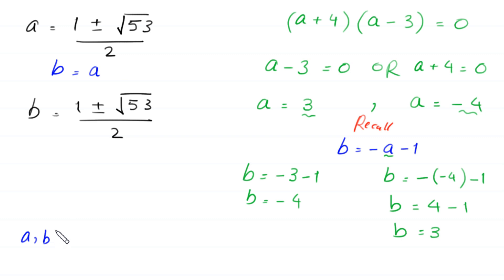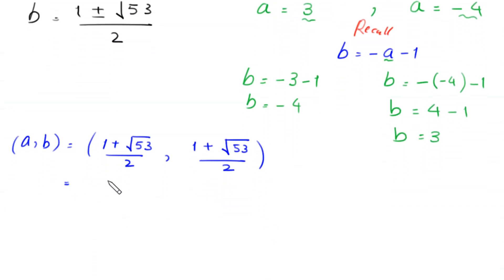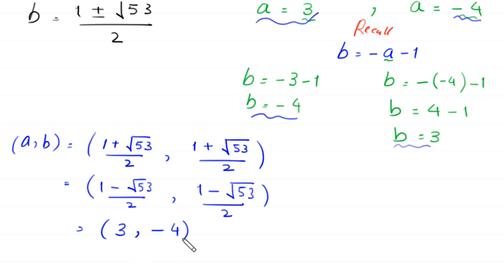So we get four pairs of solutions. The first pair: (a, b) equals ((1 plus root 53)/2, (1 plus root 53)/2). The second pair: ((1 minus root 53)/2, (1 minus root 53)/2). The third pair: (3, negative 4). And the fourth pair: (negative 4, 3). These are the four pairs of solutions of this system of equations.